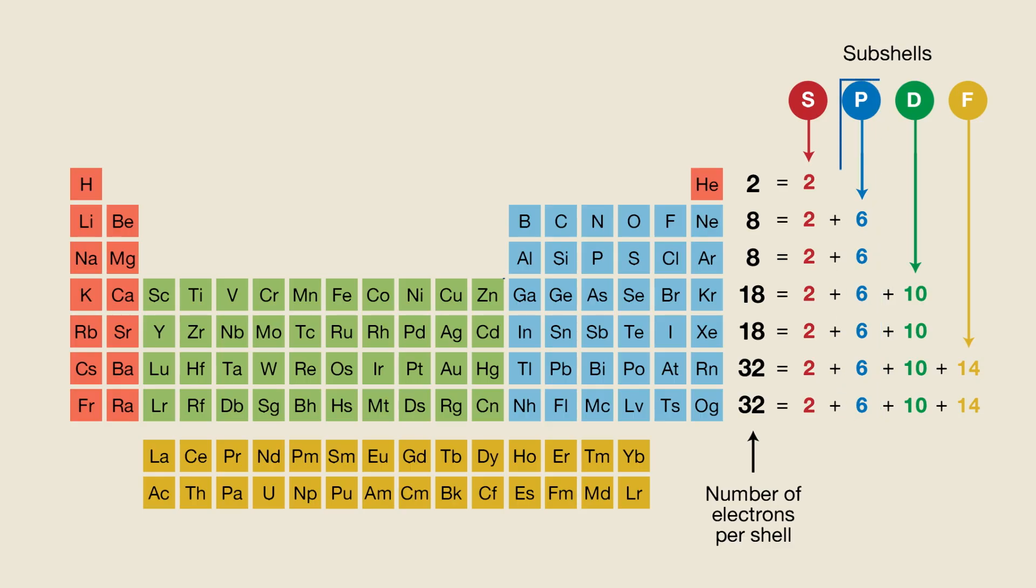Then there's this long block in the middle, which I've shown in green, that is 10 elements wide, which matches the number of electrons in the D subshell. Finally, remember that footnote at the bottom, shown here in yellow? Well, if you count the number of elements in those rows, you'll note that, surprise surprise, they come to 14, which of course is the number of electrons in the F subshell.